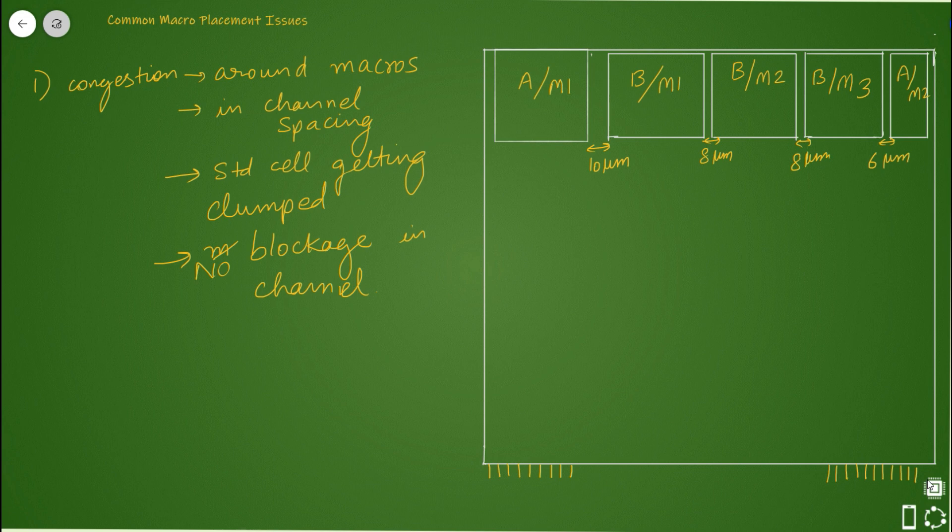No blockage in the channel area is causing congestion. The solution is to apply proper placement blockage - it could be hard or soft placement blockage - in your channel based on your design.